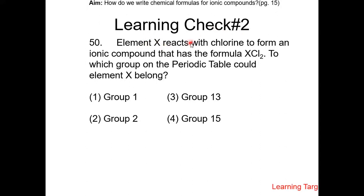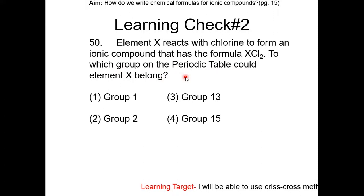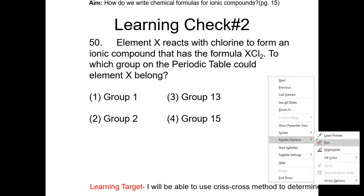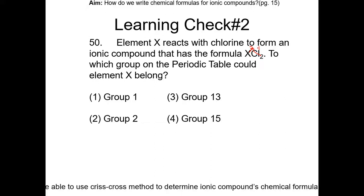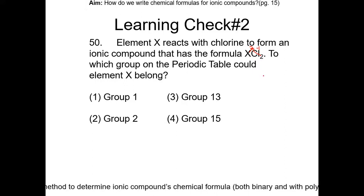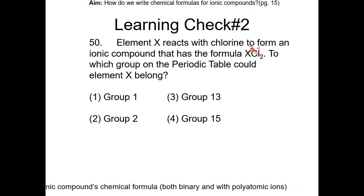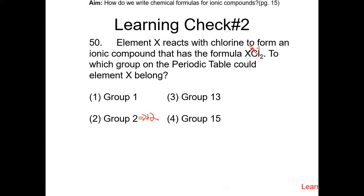Learning trick number 2: element X reacts with chlorine to form an ionic compound with the formula XCl2. To which group on the periodic table could element X belong? Crisscrossing backwards: X will have a charge of 2, and Cl will be 1. The charge of Cl on the reference table is minus 1 because Cl is a non-metal. So X must be a positive 2. Looking at the groups on the periodic table, group 2 elements all have a positive 2 charge. So the best answer is choice 2.